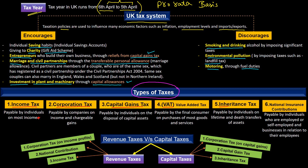Next we have inheritance tax, which is payable by individuals on lifetime and death transfer of assets. And finally we have national insurance contribution, which is payable by individuals who are employed or self-employed and by businesses in relation to their employees.